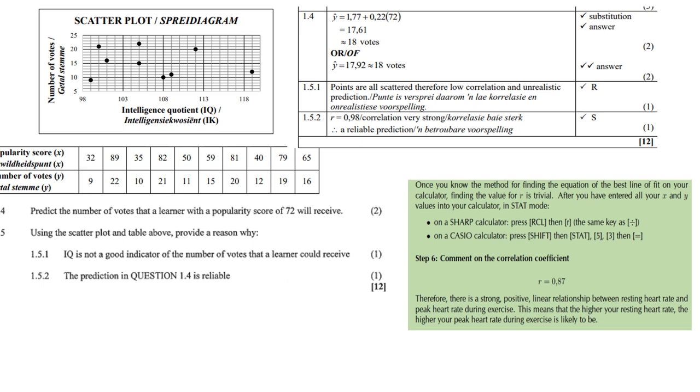Now the prediction in question 1.4 is reliable. Well you must first work out the correlation coefficient. If you look at my example in green there, you forgot how to do it. Just go through the example there and see can you work out the correlation. Once you've got your R value and now you can predict. Now the R value is 0.98 which is very close to 1. So that means it's a very strong correlation. So therefore it is a reliable prediction.